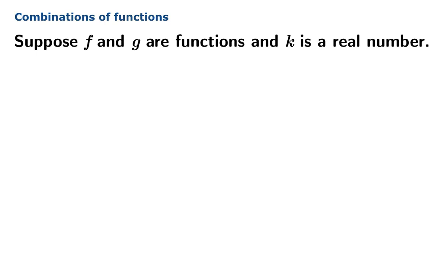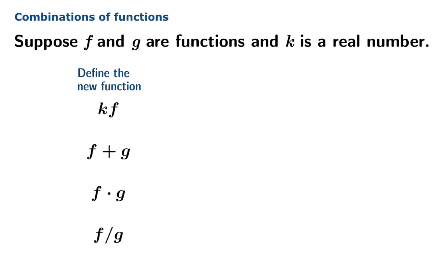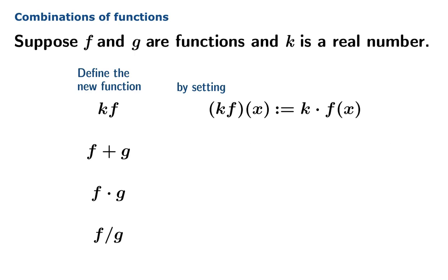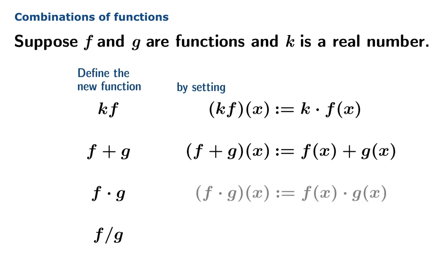So we're about to embark on a little discussion where keeping that distinction is pretty important. Suppose f and g are functions and k is a real number. We can define various new functions from these ingredients: the scalar multiple of f by k, the sum of f and g, the product of f and g, and the quotient of f and g. The value of kf at x, the sum function evaluated at x is exactly what you get if you just add the function values for f and g. The product and the quotient are defined similarly.